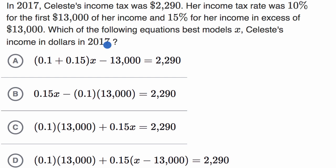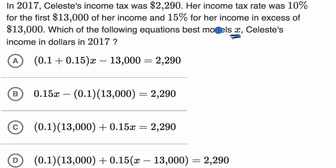Pause this video and see if you can work through this. Now let's do it together. Rather than going choice by choice, I would just like to construct an expression that involves her income, X, and then gets us to what her taxes should be, and then equates that to $2,290.